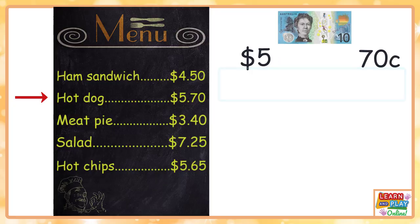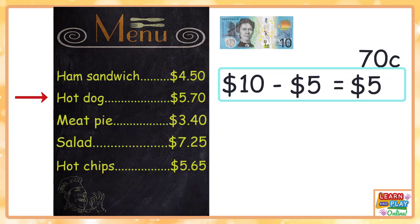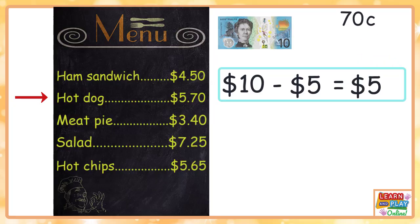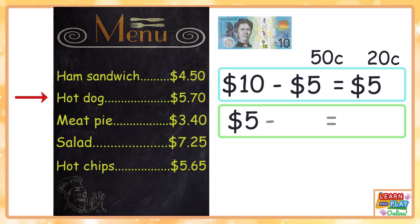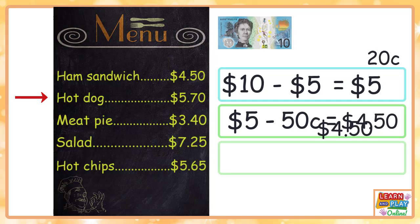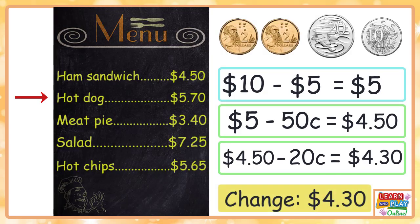Starting with the dollars: ten dollars minus five dollars will leave us with five dollars. Now for the cents, I'm going to try something different. To make seventy cents, I know that I need fifty cents plus twenty cents. Breaking up the cents like this might be a strategy that can help you subtract cents a little bit easier. Starting with my five dollars, I subtract fifty cents — that leaves me with four dollars and fifty cents. Then four dollars fifty take away twenty cents leaves me with four dollars and thirty cents.